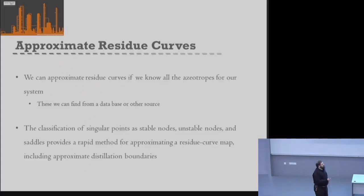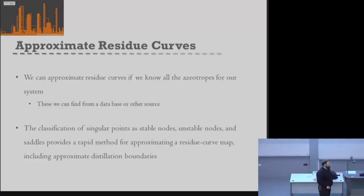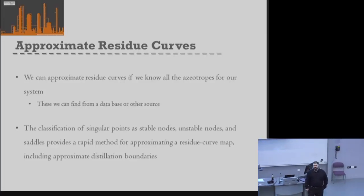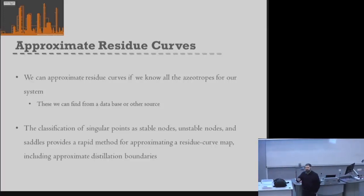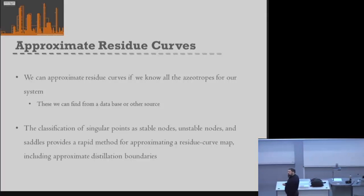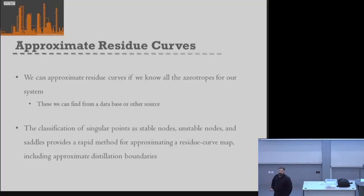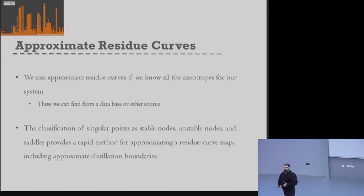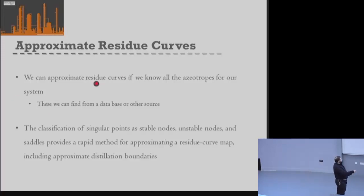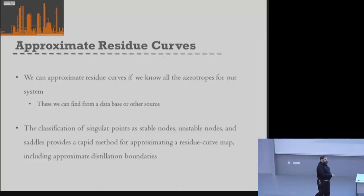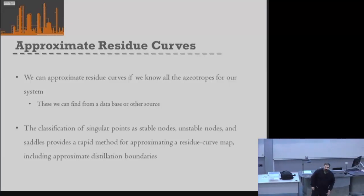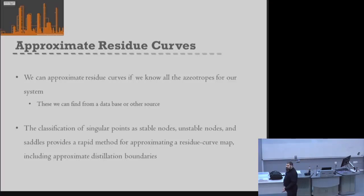For this approximate method we need to know where all the azeotropes are in our system and their temperatures at the operating pressure. Even though full VLE data isn't always available - especially for ternary systems - often what is available is a database listing the compositions and temperatures of azeotropes for those systems. With this information we can use a method built around distillation knowledge and topology to actually predict our residue curves.